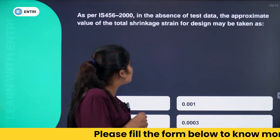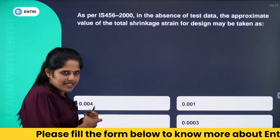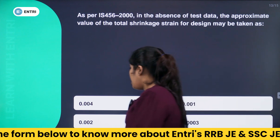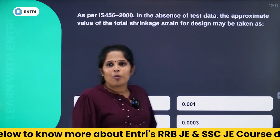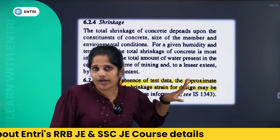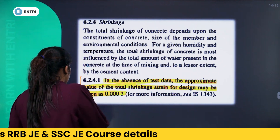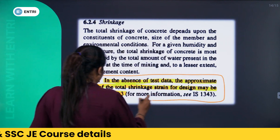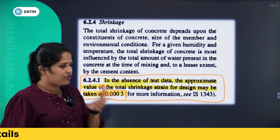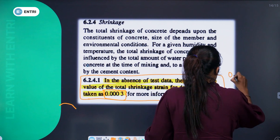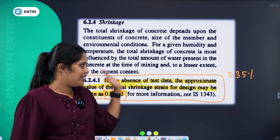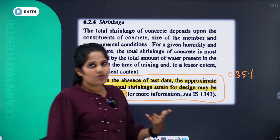Next question: as per IS-456-2000, in the absence of test data, the approximate value of total shrinkage strain for design may be taken as — 0.004, 0.001, 0.002, or 0.003. The answer is Option D: 0.003. Note also that the maximum strain in the outermost compression fiber in bending is 0.0035, and the strain under axial compression is 0.002.